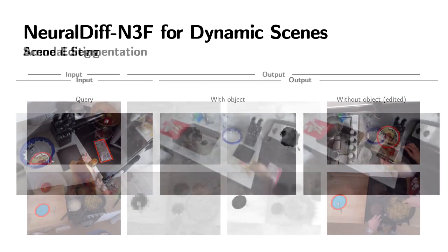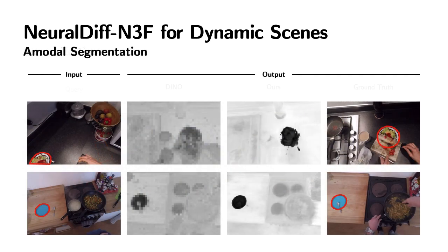Finally, we show results for the task of segmenting objects through occlusions, or amodal segmentation. We compare NeuralDiff-NEFF distilled features with DINO features. Given a query in a reference frame, NEFF allows us to retrieve the whole object in a target frame despite occluders, by comparing features in 3D and suppressing the occupancies of similar regions prior to rendering.